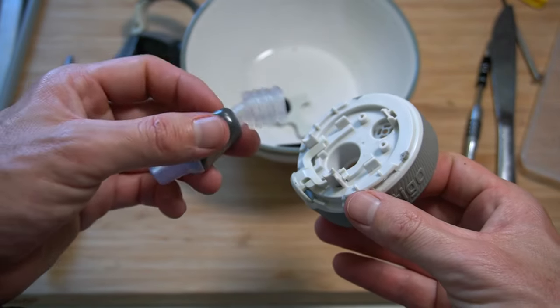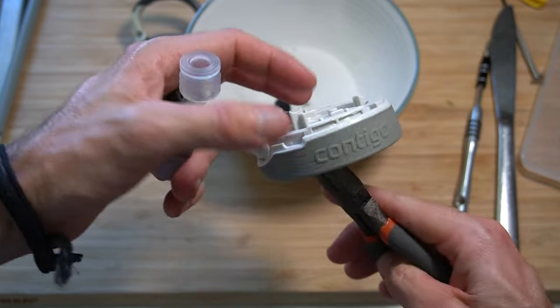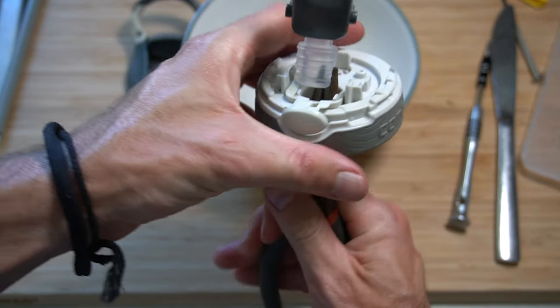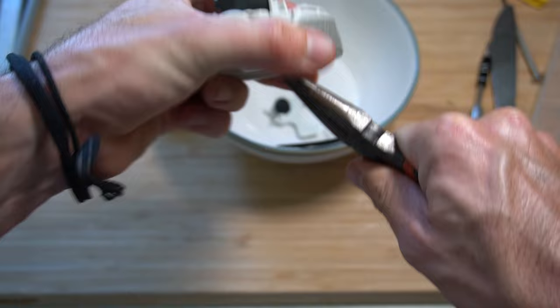Once you've done that, we can now go ahead and put our spout in. To do this, I like to put my pliers through the bottom, then grab onto the spout with my pliers and pull it through.